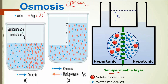Osmosis occurs in the liquid state. Diffusion of molecules or ions of a solute through a membrane is different from diffusion of water molecules. The term diffusion is used for the net movement of solute across a membrane, while osmosis is exclusively used for the diffusion of solvent across a semi-permeable or differentially permeable membrane from lower concentration into higher concentration.